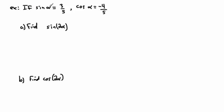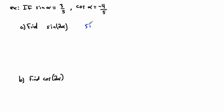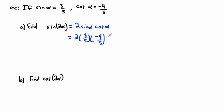Let's do another one. We have sine of alpha equals three over five, and cosine of alpha equals negative four over five. Find sine of two alpha. I'm using different letters so you're not confused if you see x, alpha, or theta. Again, I'll use the double angle formula: sine of two alpha equals two sine alpha cos alpha. Both pieces are given, so this is straightforward — it's two times three over five times negative four over five.